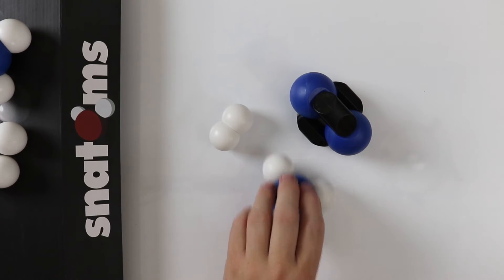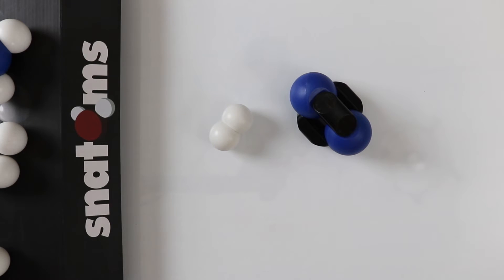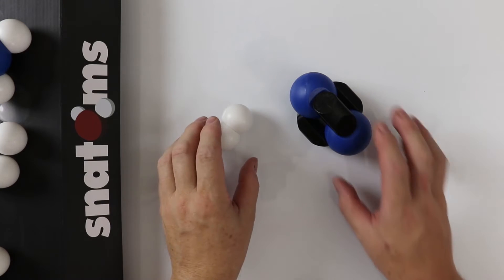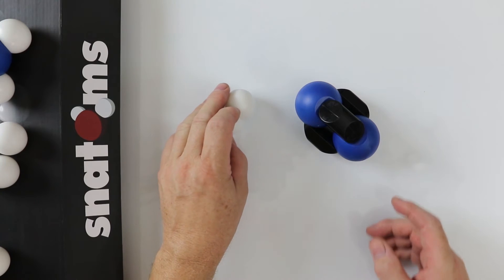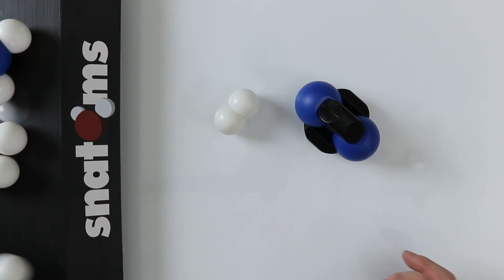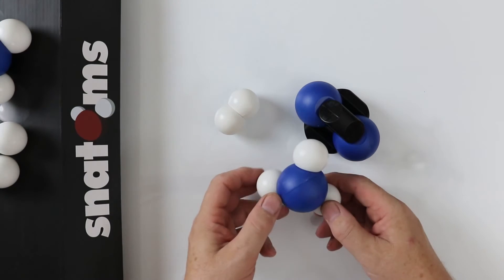The nitrogen atom has three bonds and each hydrogen atom has one bond. They combine to make ammonia which looks something like this.